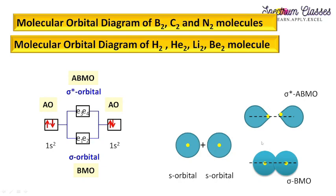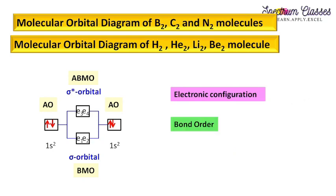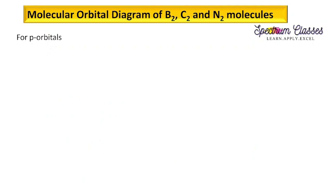I discussed this in detail using linear combination of atomic orbitals in my previous video — if you have not checked that, I suggest you go and watch it first. We also discussed the electronic configuration for molecular orbitals, bond order, and magnetic properties in detail. We are going to consider these three points here for boron, carbon, and nitrogen. Let's start with this video in which p orbitals are involved.